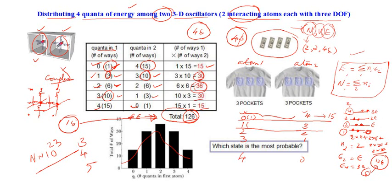These two equations are sufficient for understanding the concept of microstates and how to count them in a particular system. We will discuss statistical distributions in a later video. Thank you.